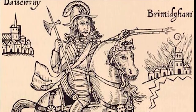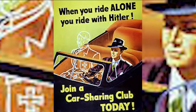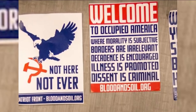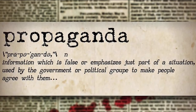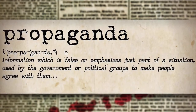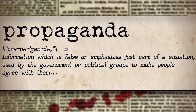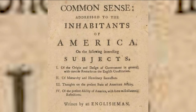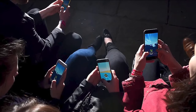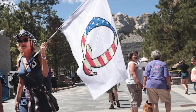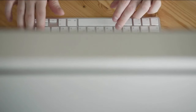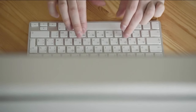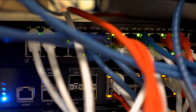Propaganda has been used since the beginning of time to influence and confuse, to bring about feelings of pride or hatred. The definition of propaganda is information, especially of a biased or misleading nature, used to promote or publicize a particular political cause or point of view. Even though it may have morphed from pamphlets and films to videos and social media, propaganda is a way of life, used by politicians, companies, and organizations. Today, a conversation about computational propaganda and how it's being used to influence and incite in modern-day America.